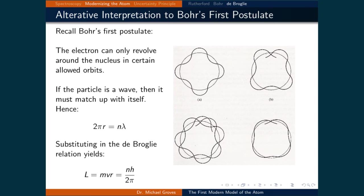The image illustrates this point. The top left image shows when the circumference, 2 pi r, equals an integer multiple of the wavelength — the wave matches up. In the other three pictures, the circumference is not an integer multiple of the wavelength; therefore, the wave does not match up and those orbits are not allowed.